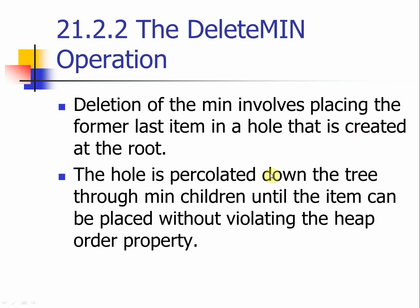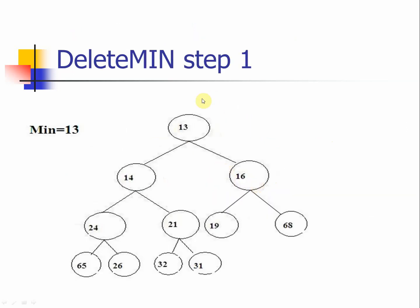Let us continue with the delete operation. The delete operation involves placing the former last item in the hole created at the root. For the delete operation, there is only one location you can perform the delete — that is the root, which is 13 here, because that's the minimum value and that's the idea of the priority queue.